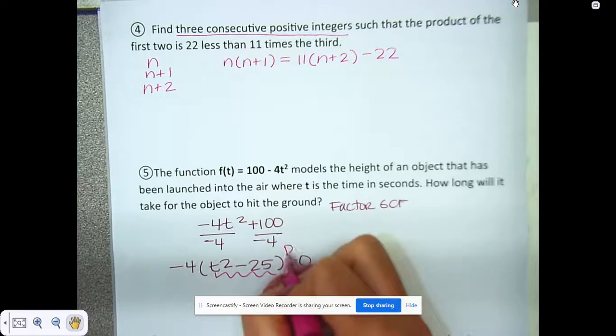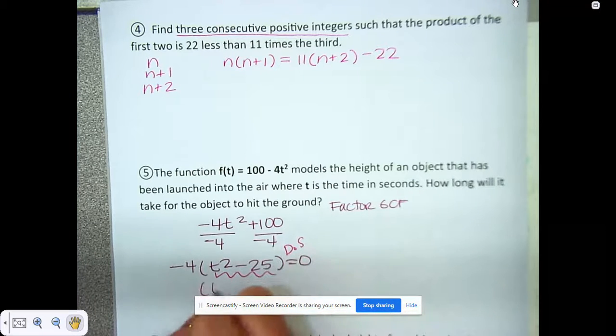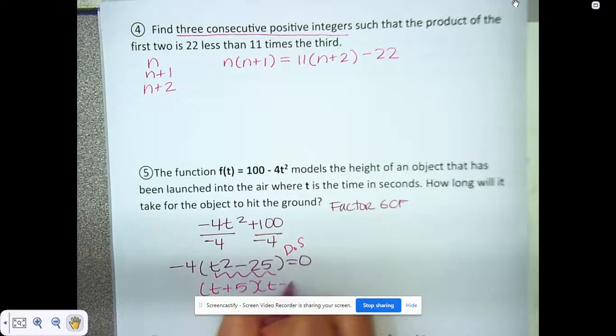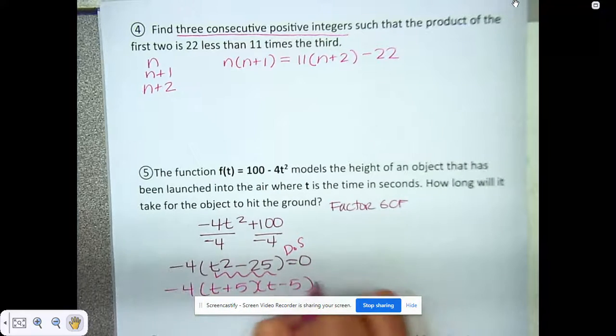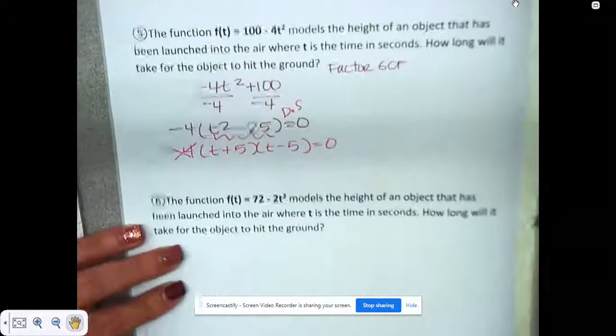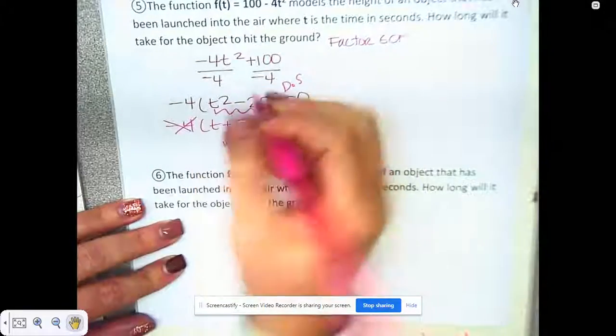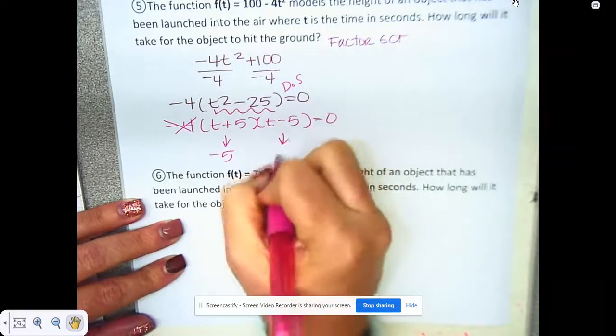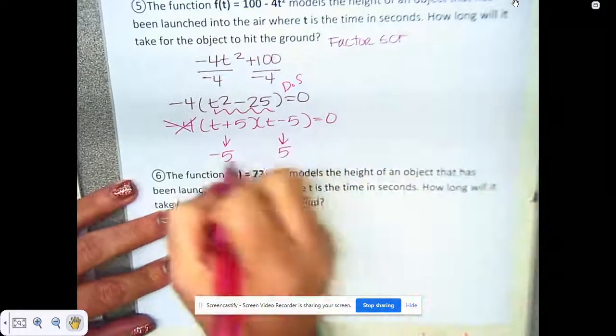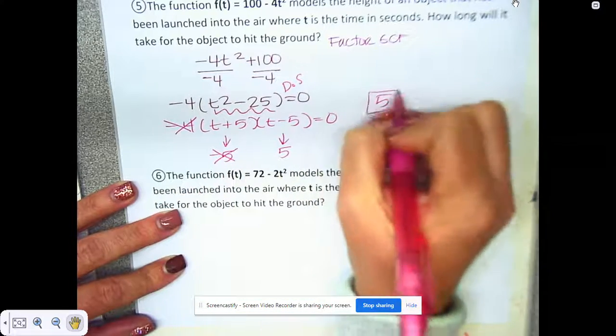This right here is a difference of squares, so that's going to give me t plus 5 and t minus 5. Remember the negative 4 is irrelevant because it doesn't have a t value. Our two answers here would be negative 5 and 5. Since we're talking about time, we throw out the negative and our answer would be 5.